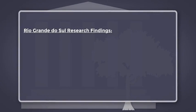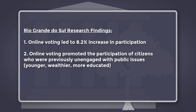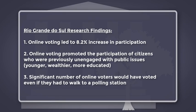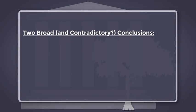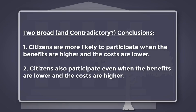We did some research in Rio Grande do Sul, and here's what we found. First, the introduction of online voting led to an 8.2% increase in participation. Second, online voting promoted the participation of citizens who were previously unengaged with public issues. Online voters were more likely to be younger, wealthier, and more educated. Yet a significant number of online voters stated that they would have voted even if they had to walk to a polling station. We can draw two broad and slightly contradictory conclusions: citizens are more likely to participate when benefits are higher and costs are lower, yet citizens also participate even when benefits are lower and costs are higher.